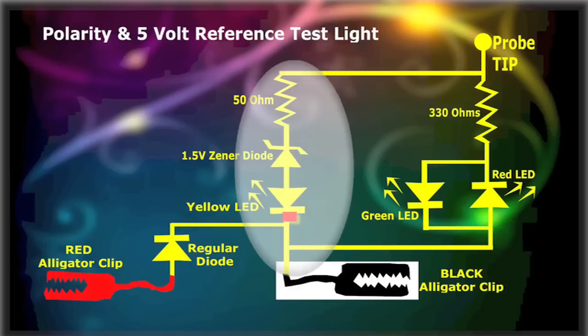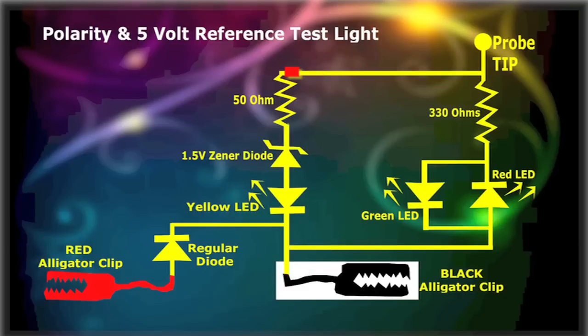The 5V Reference LED circuit is calibrated for 5V. The Zener diode is a 1.5V unit, the yellow LED drops the typical 2.5V, and the rest of the voltage is dropped by the current limiting 50 ohm resistor. This circuit side is very sensitive, and it will also light up above 5V, or together with the green LED.